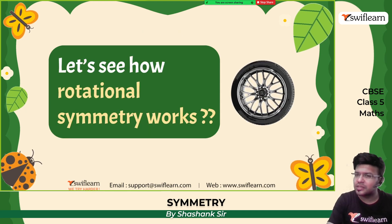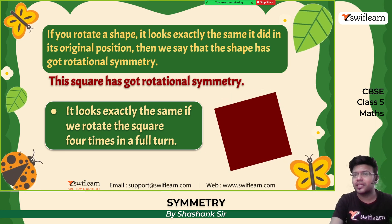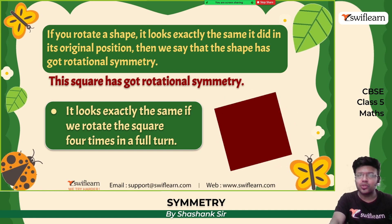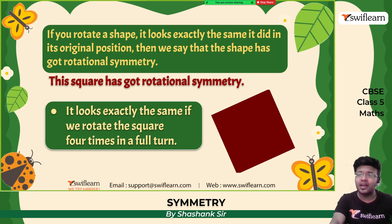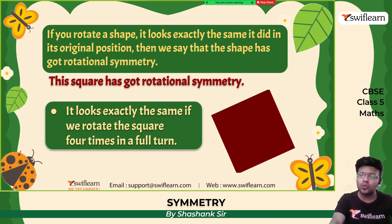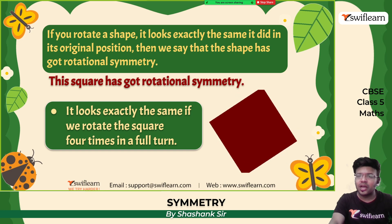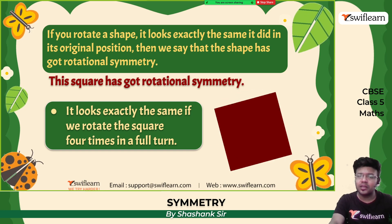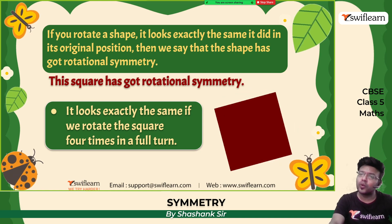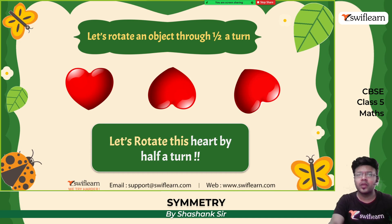Let's see how rotational symmetry works. If you have a shape and it looks exactly the same as it did in its original position, then we say that the shape has got rotational symmetry. For example, a square has got rotational symmetry. It looks exactly the same if we rotate the square four times through all four turns. The square is rotated four times and it looks the same.